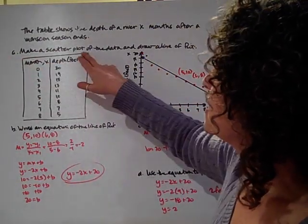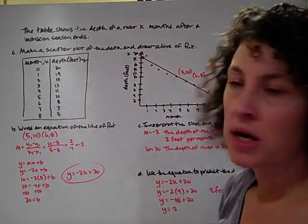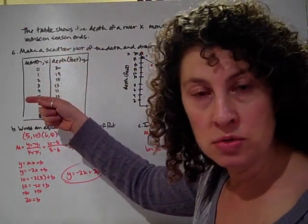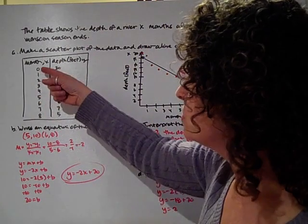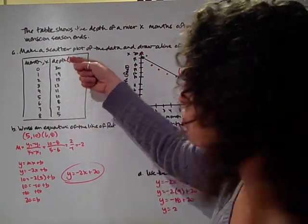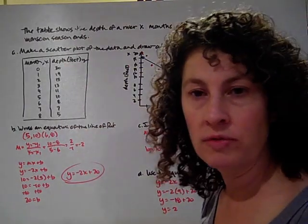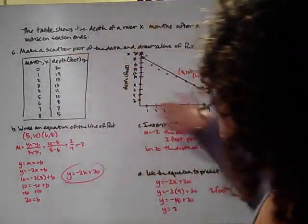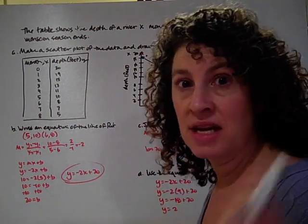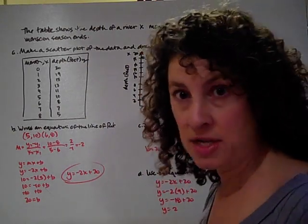So we're going to start by making a scatter plot of the data and drawing a line of fit. Here we have the month, and this is the months after monsoon season has ended. So month zero is right at the end of monsoon season. And the depth of this river in feet. So how deep is the river in feet? So first I've got my coordinate plane over here. I'm going to graph these points.